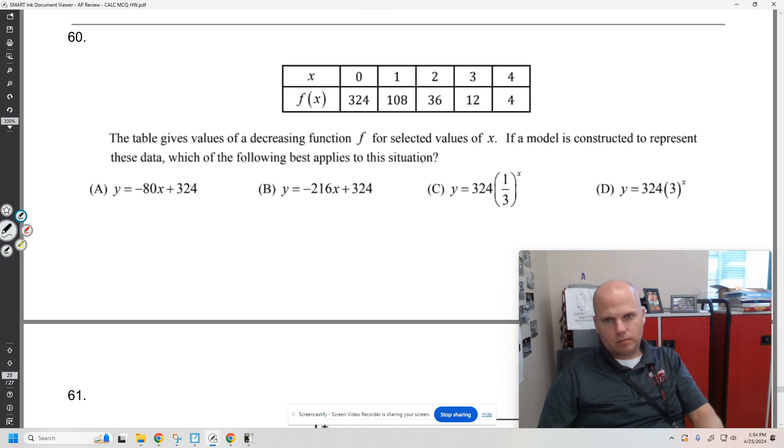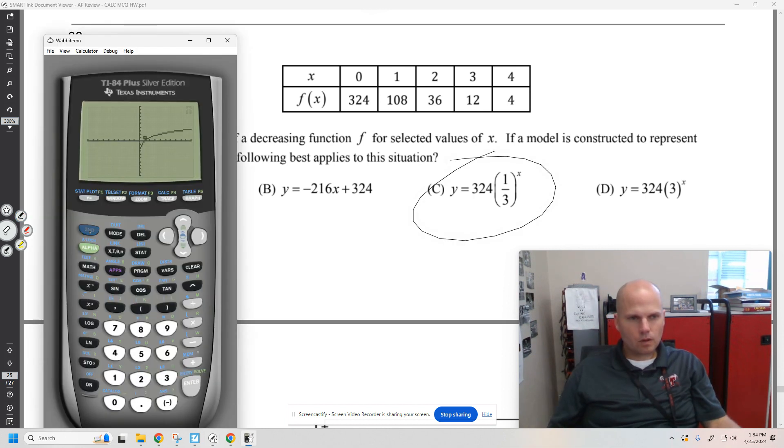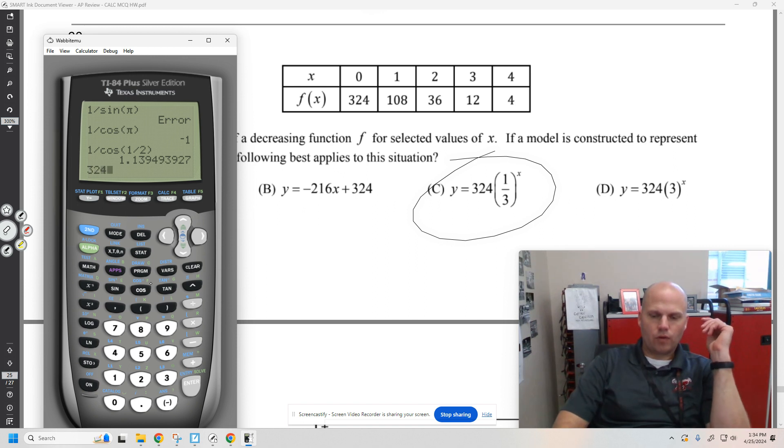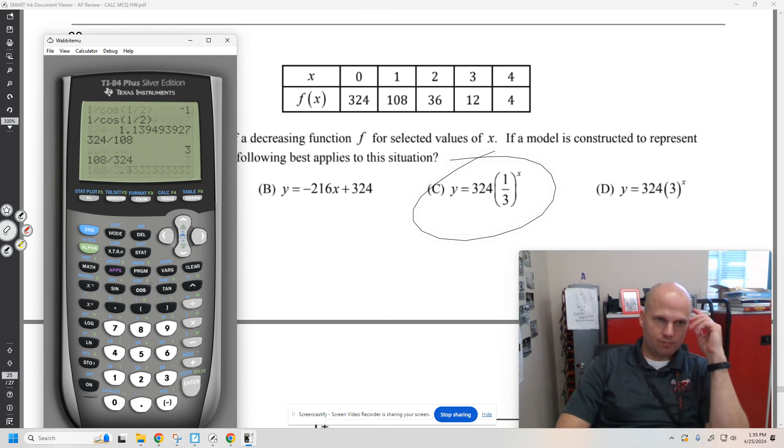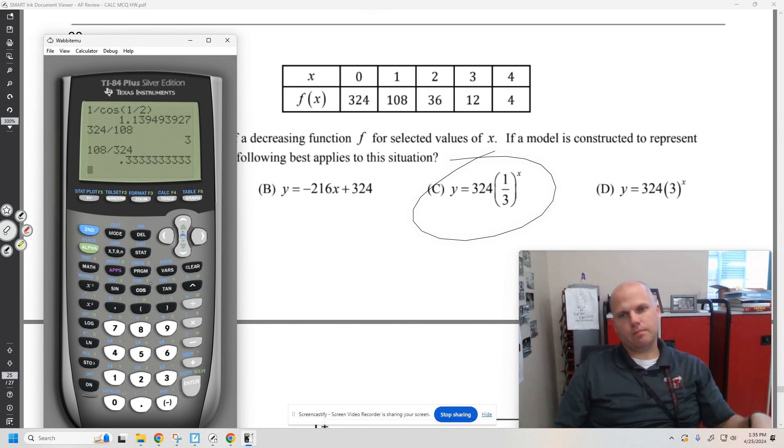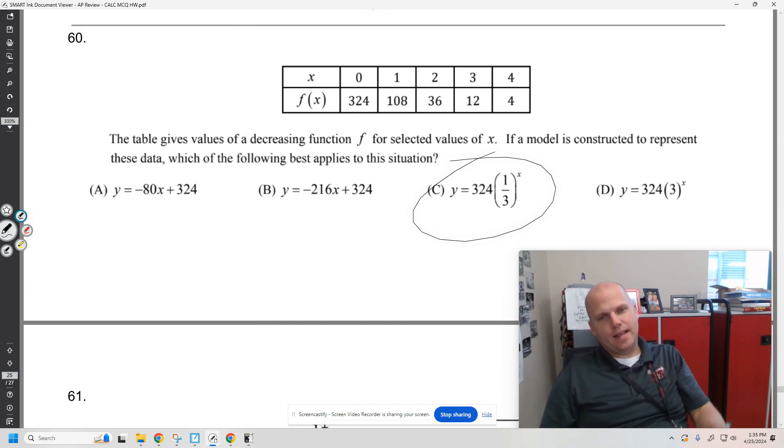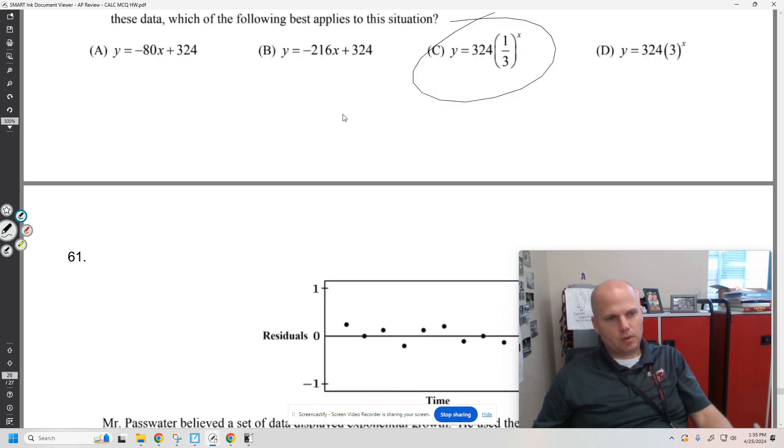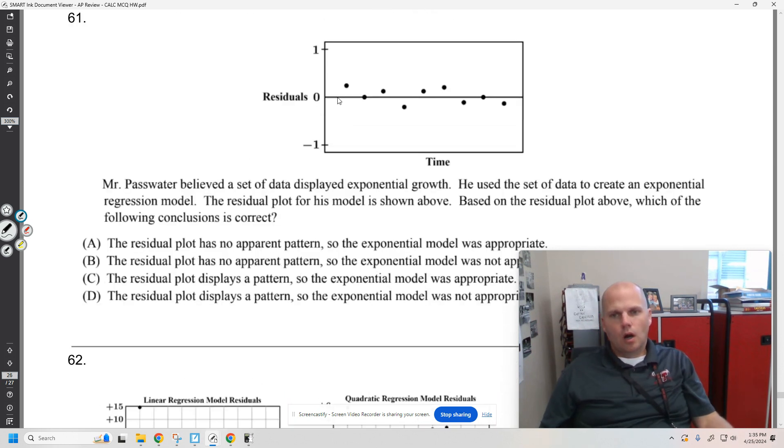I'm just going to go ahead and figure this out. So, 324 divided by 108 should be a third. Or it's 108 divided by 324. That's a third. Okay. So, could you stat edit? Yeah, sure. That's good. All right.